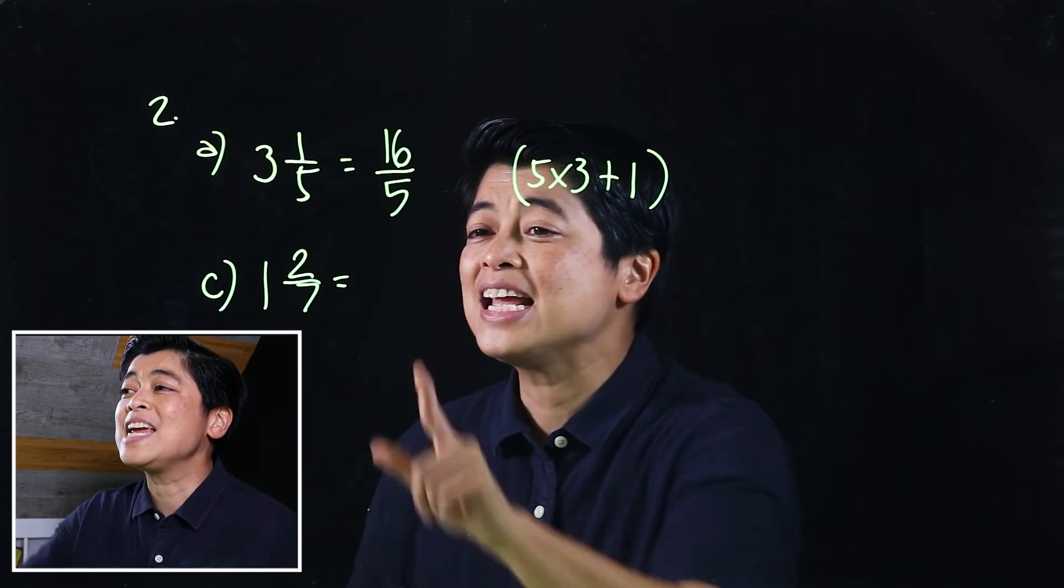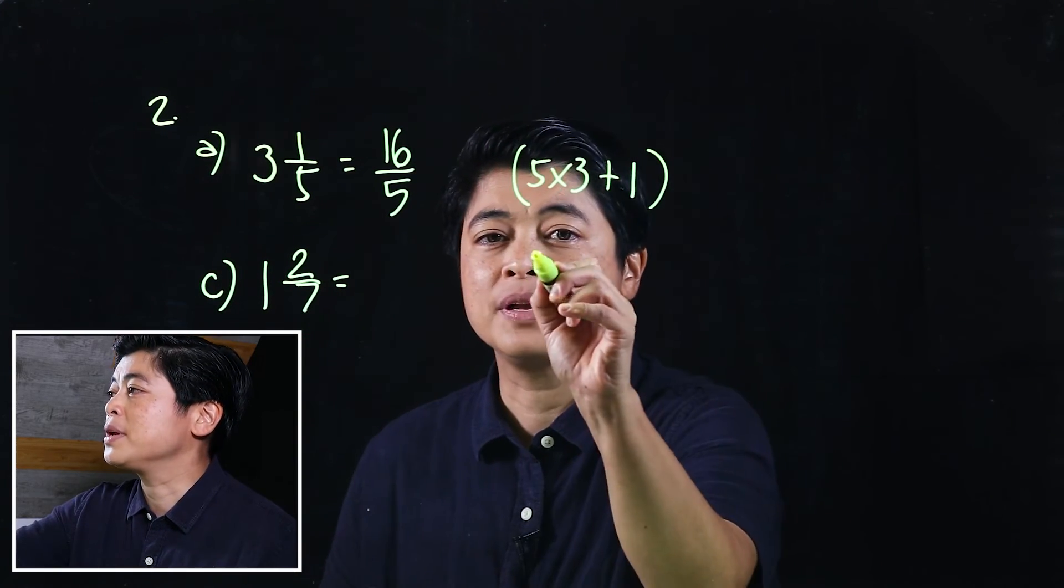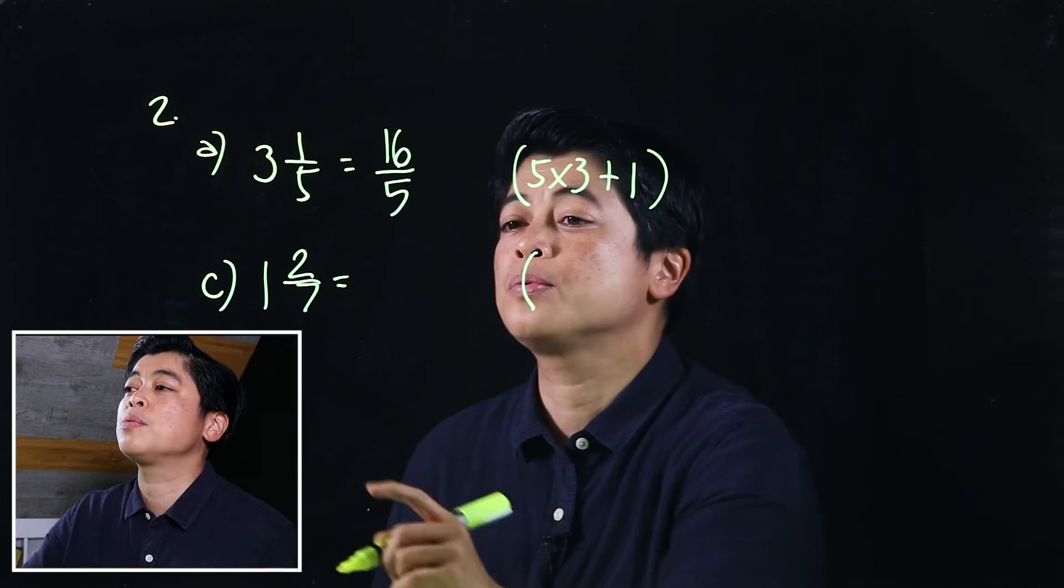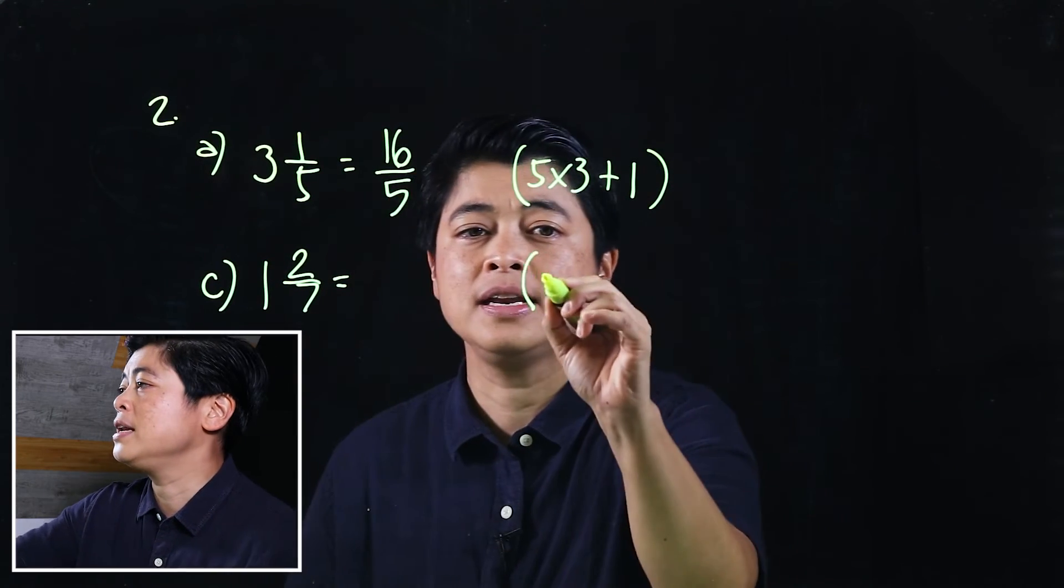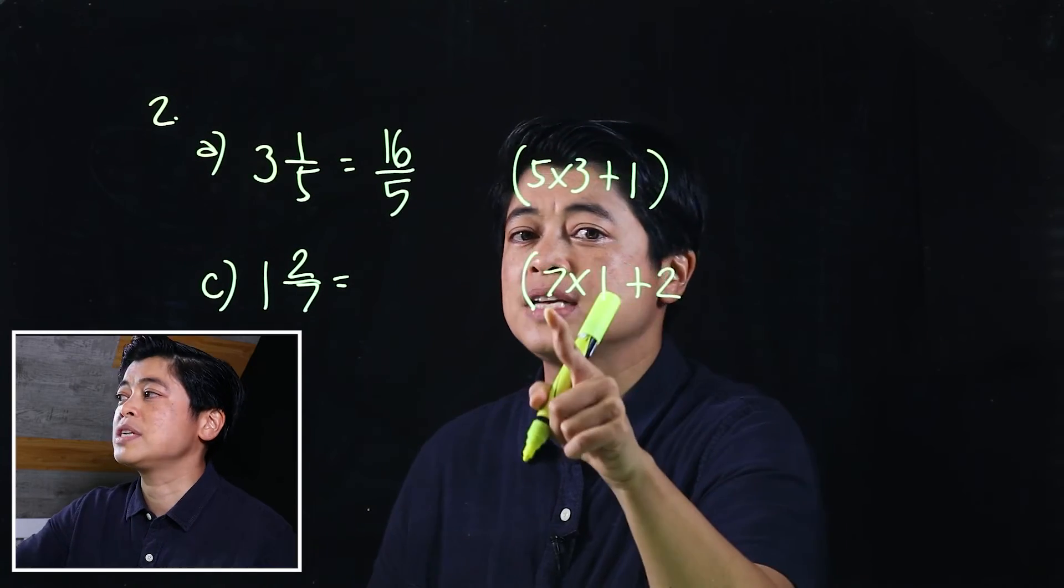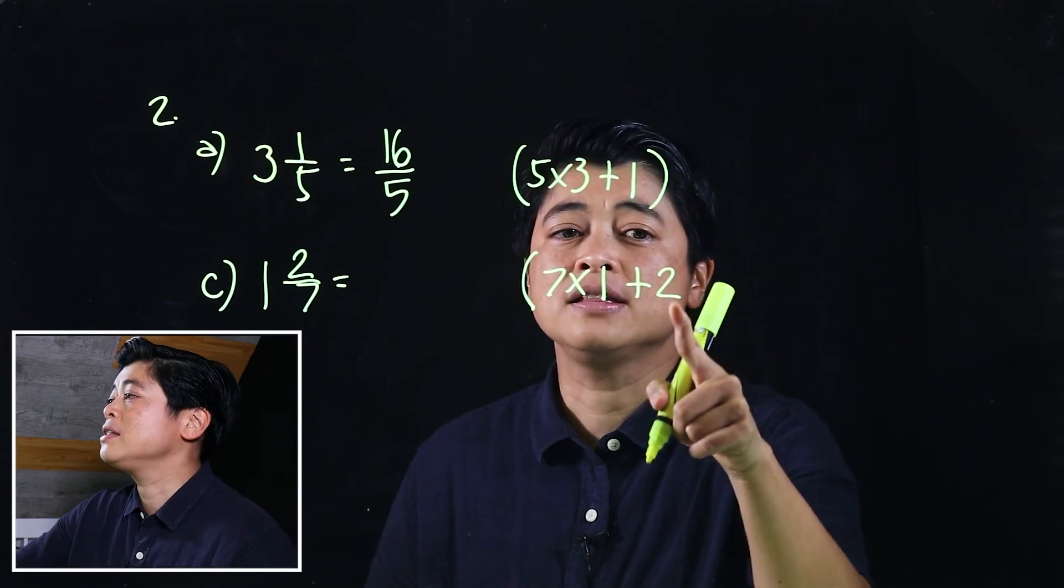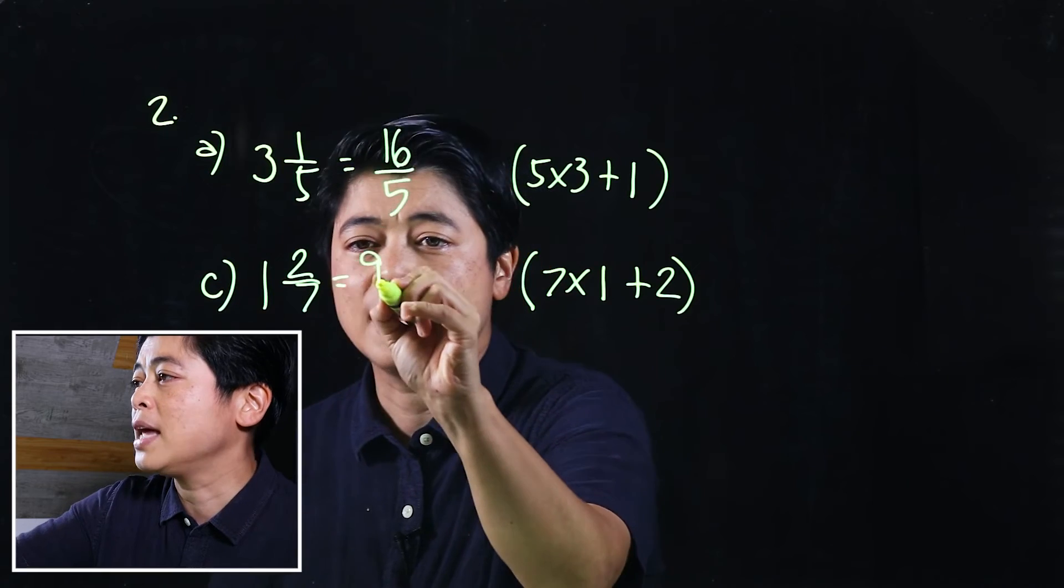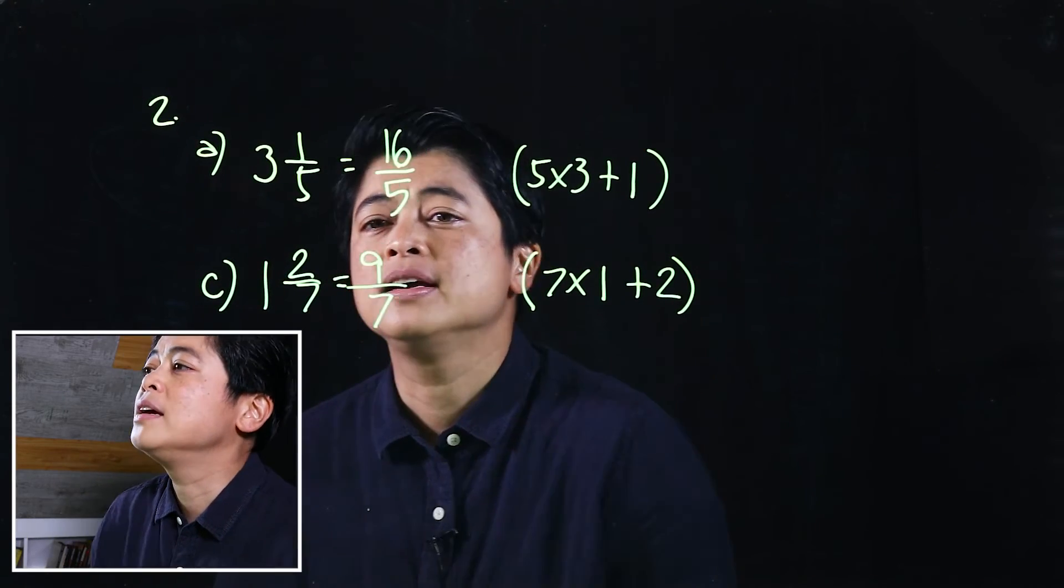Doing the same thing for letter C, I'm gonna put here on the side the working: 7 times 1 plus 2. So 7 times 1 is 7, then add a 2, that will make it 9 over 7.